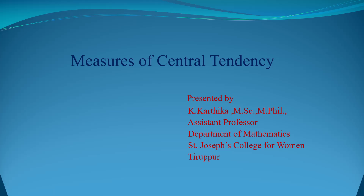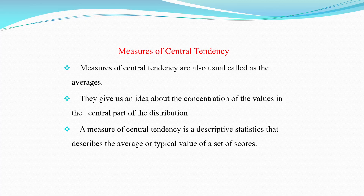Hi everyone, today we are going to talk about Measures of Central Tendency. Measures of Central Tendency are also usually called as the averages. They give us an idea about the concentration of the values in the central part of the distribution. A Measure of Central Tendency is a descriptive statistic that describes the average or typical value of a set of scores.